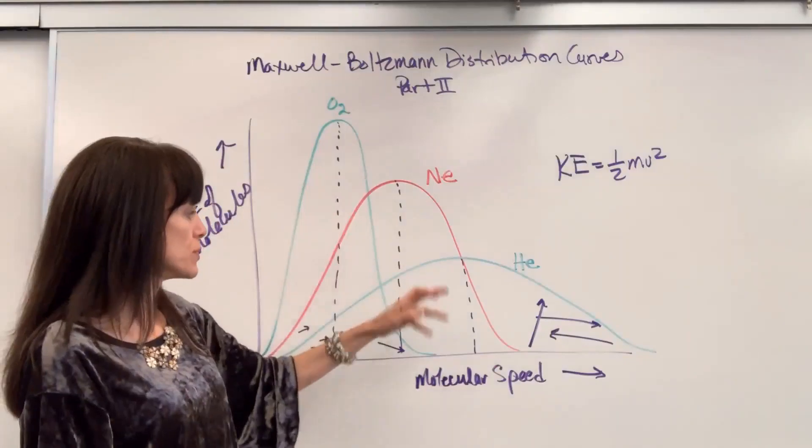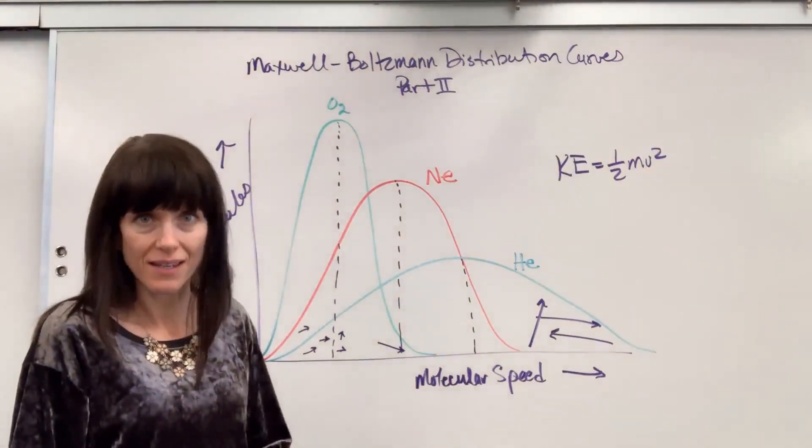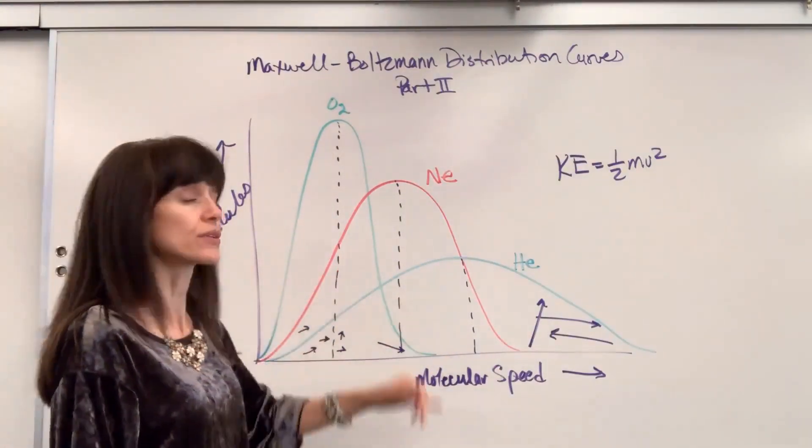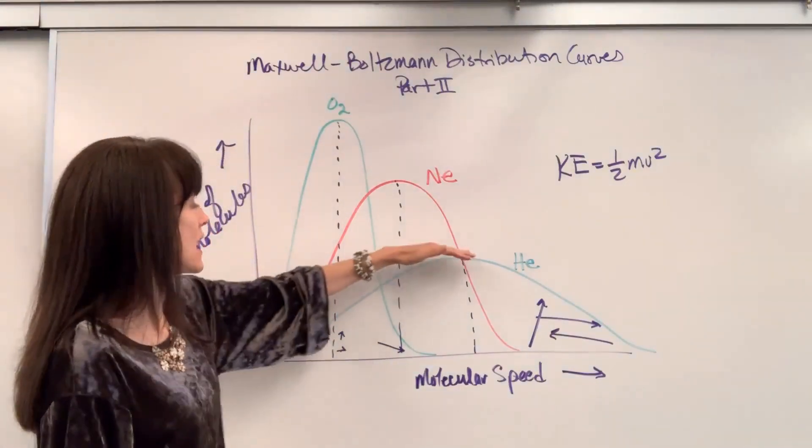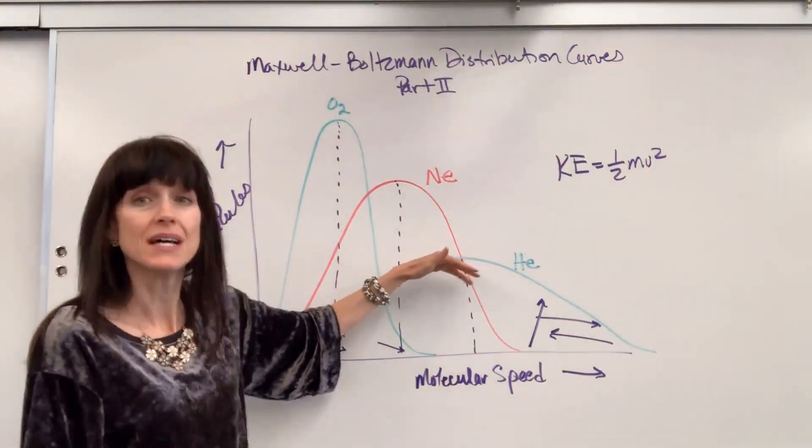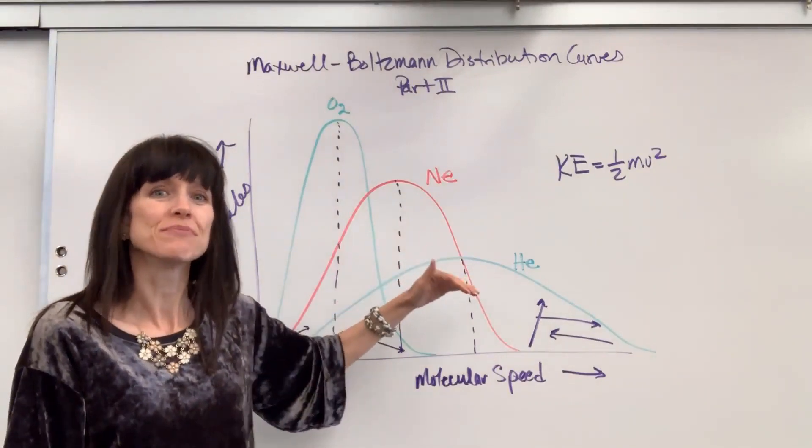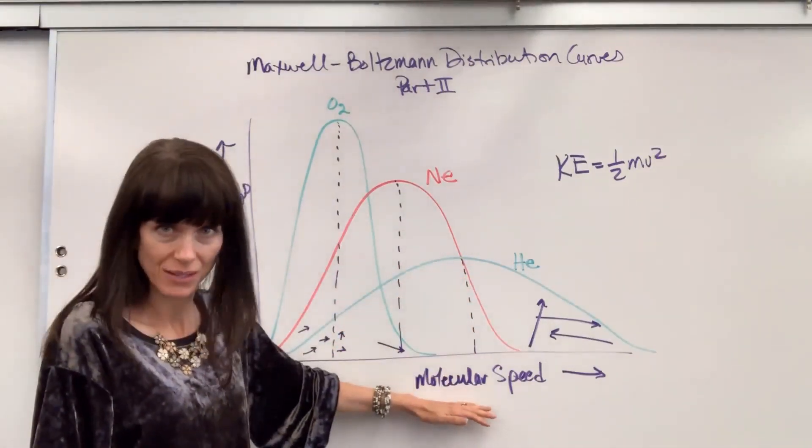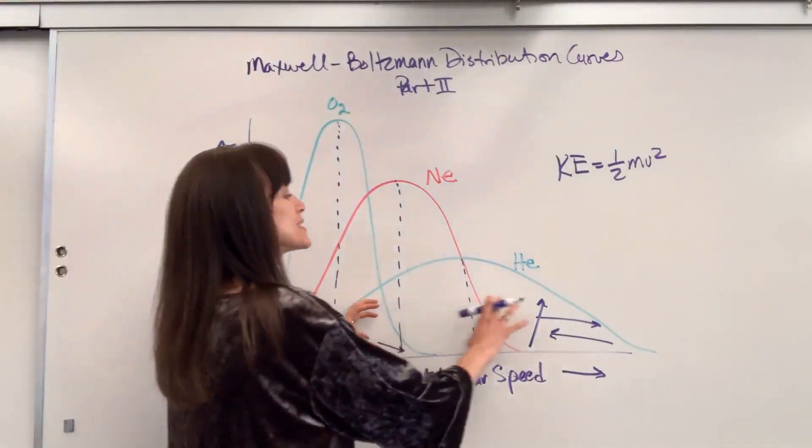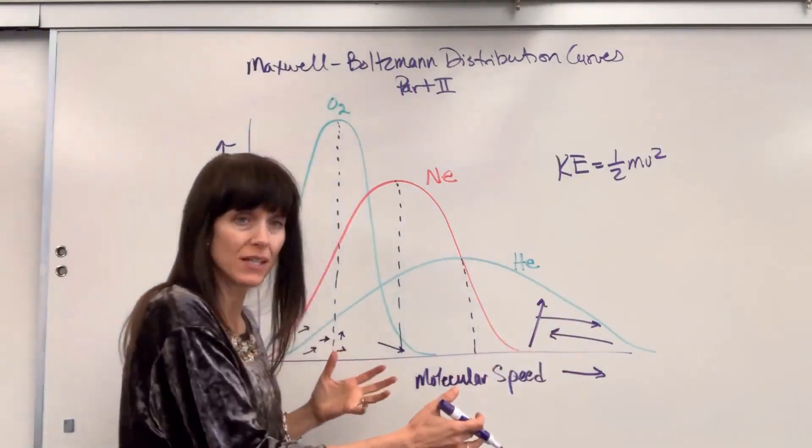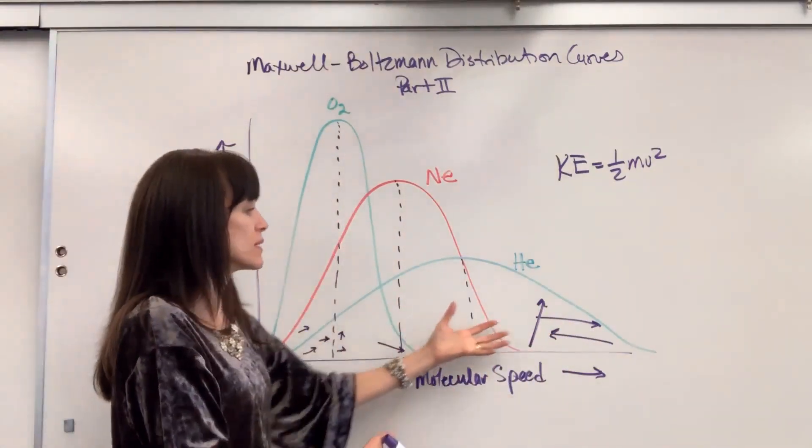So there's your distribution curve. The key is to remember that the area under the curve is the same. And just because the height when we're looking at number of molecules is lower, that doesn't mean that the speed is lower. It just means you have a wider distribution of speeds. You're going to have some slow, some middle, and more fast.